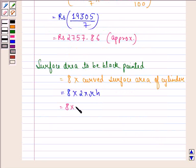That is equal to 8 into 2 into 22 by 7 into 1.5, that is the radius, into 7, that is the height. That is equal to 528 cm².